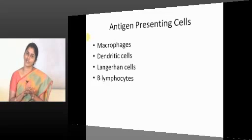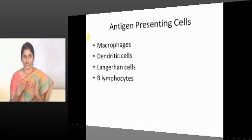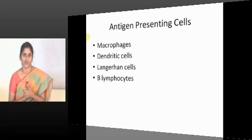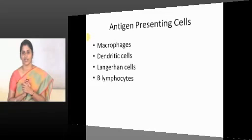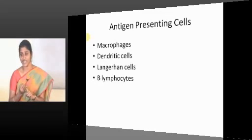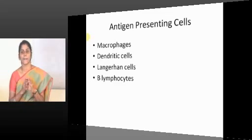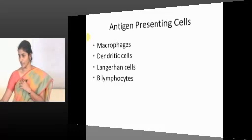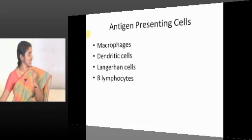Which immunoglobulins are expressed on naive B cells? Naive B cells are B cells that have not yet encountered antigen — they are not activated. Even in that state, they express two antibodies on the surface: IgM and IgD. Both IgM and IgD are present on the surface of B lymphocytes and can act as surface receptors for identifying and processing antigens.